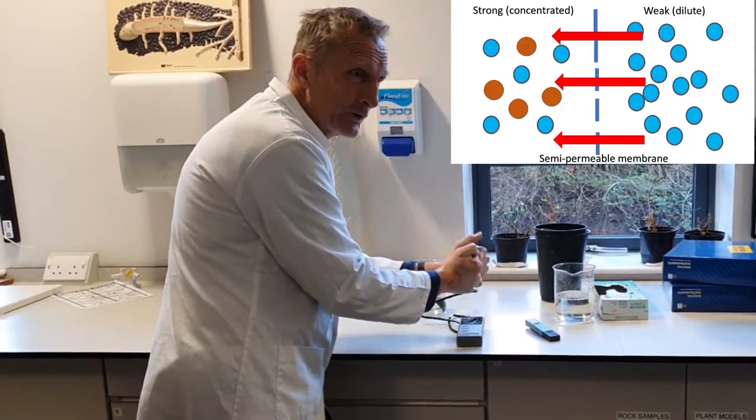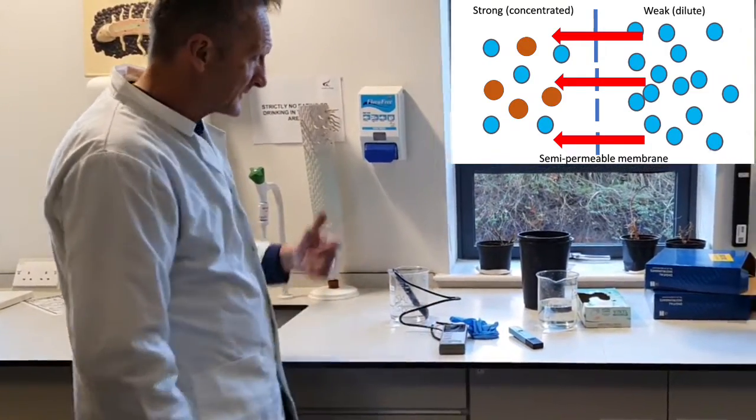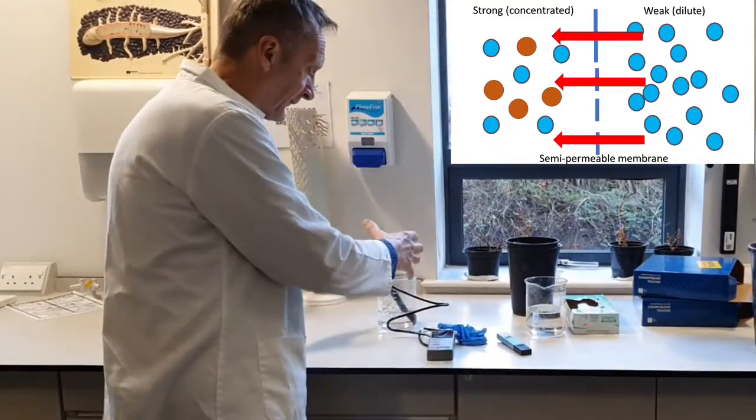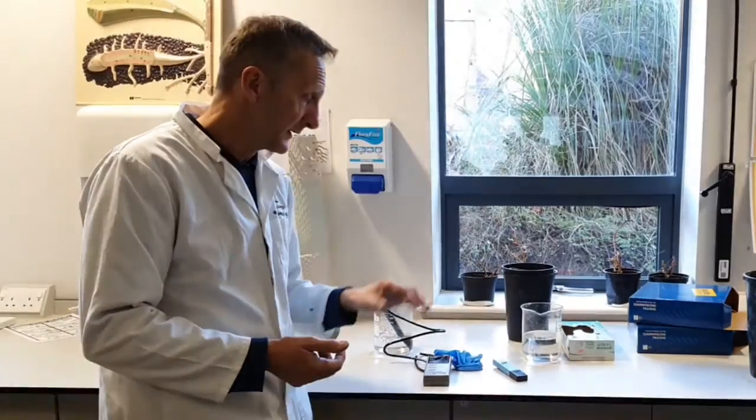It dies, goes all brown and dies. What we've got to make sure is that we're always keeping that at the right sort of levels. We also test the pH if we've got hydroponics to make sure it's between 6.5 and 7, or whatever the plant prefers.